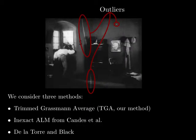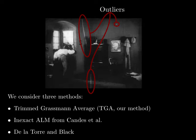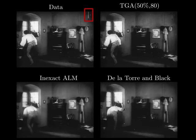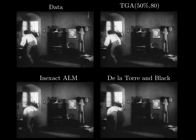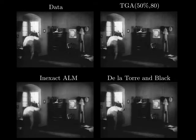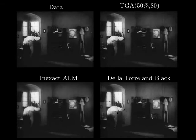We first consider a film restoration task, where we use robust subspace estimation to remove artefacts from the 1922 classic Nosferatu. These are the types of outliers we remove. Note the drastic over-smoothing from competing methods.